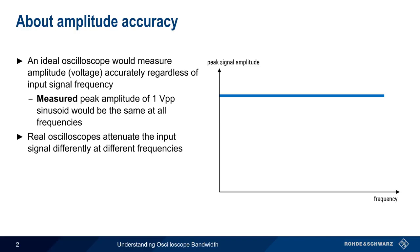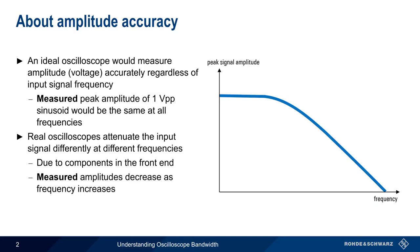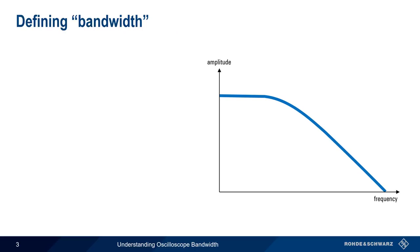All real oscilloscopes, on the other hand, attenuate the input signal differently at different frequencies. This is due to the characteristics of the components in the scope's front end, such as amplifiers and filters. These cause measured amplitude values to decrease as the input frequency increases. As shown in the graph, most scopes can measure amplitude fairly accurately up to a given frequency, after which the accuracy begins to decrease. The question, therefore, is: how do we specify or define this behavior?